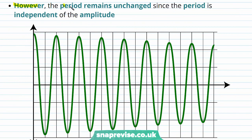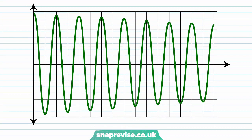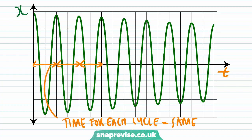However, note that the period remains unchanged because the period is independent of the amplitude. Looking again at displacement x against time t, notice that the time taken for each cycle remains the same even though the amplitude is decreasing. This means they all have the same time period T.